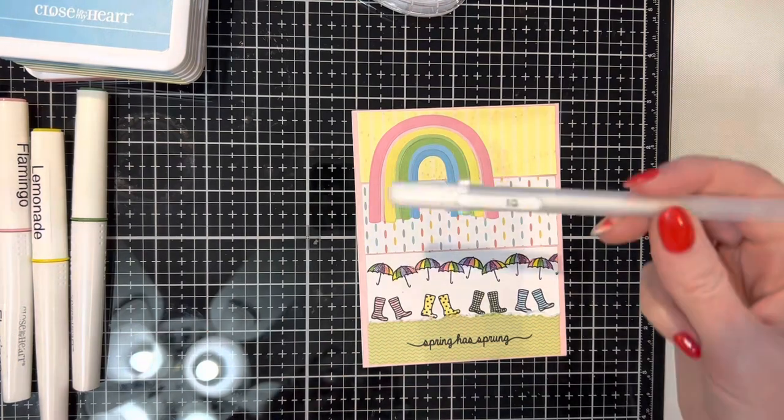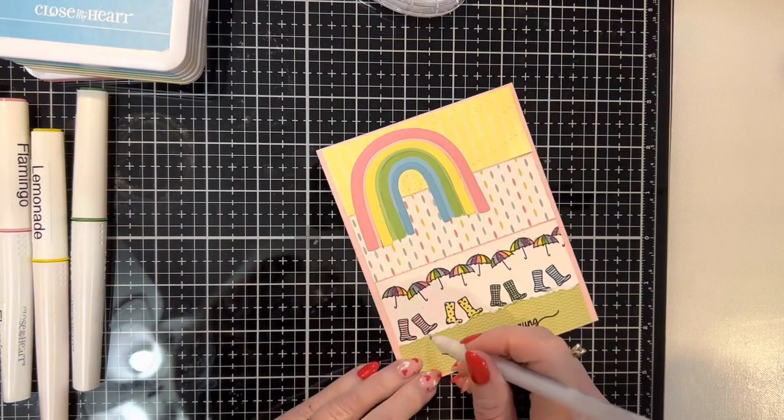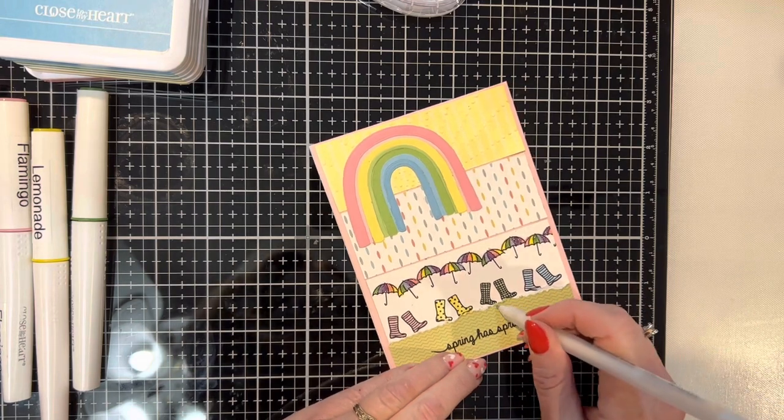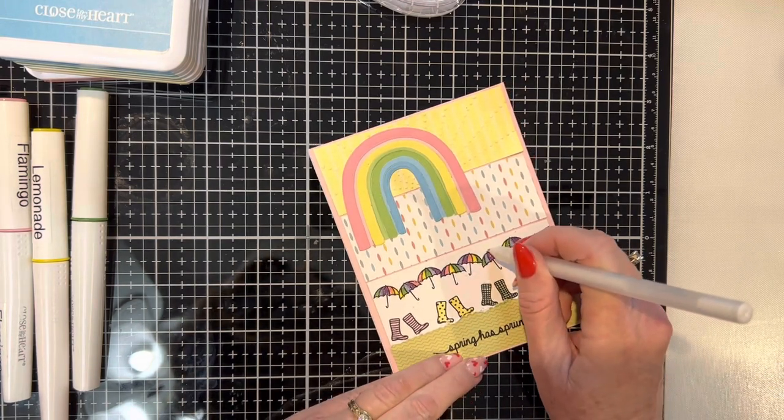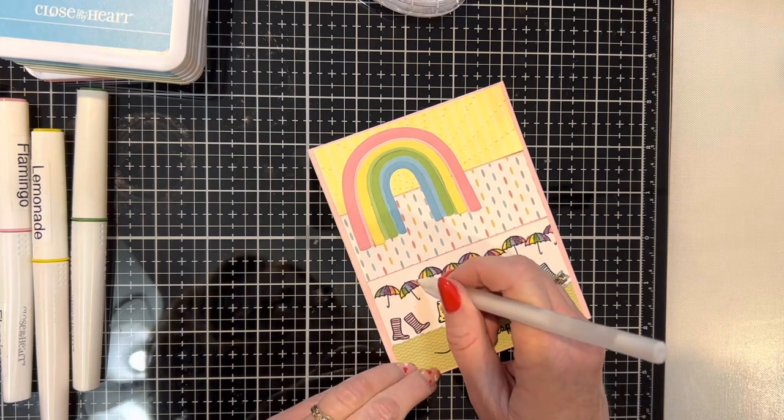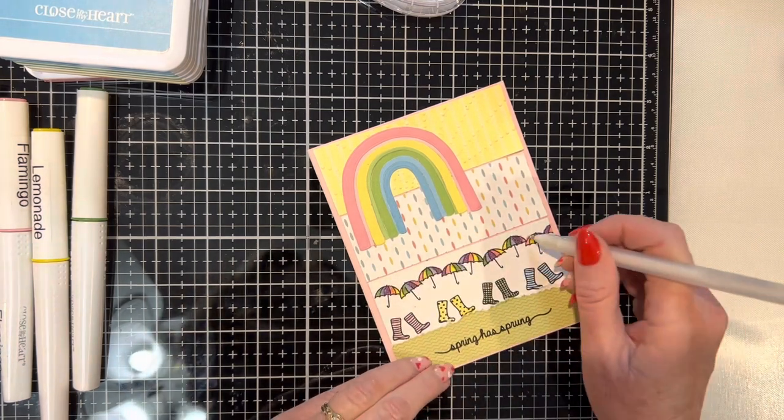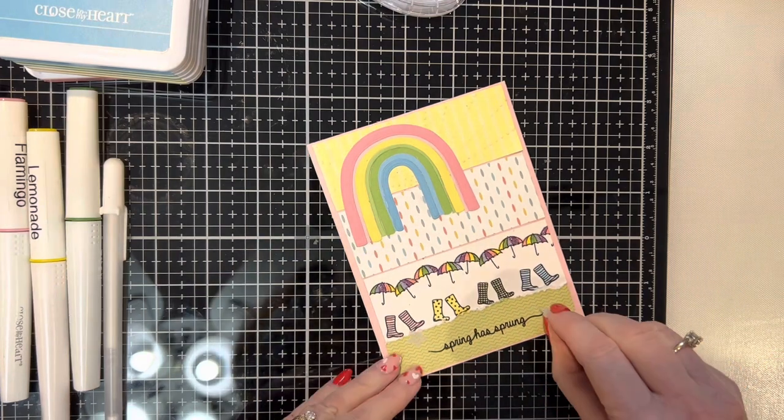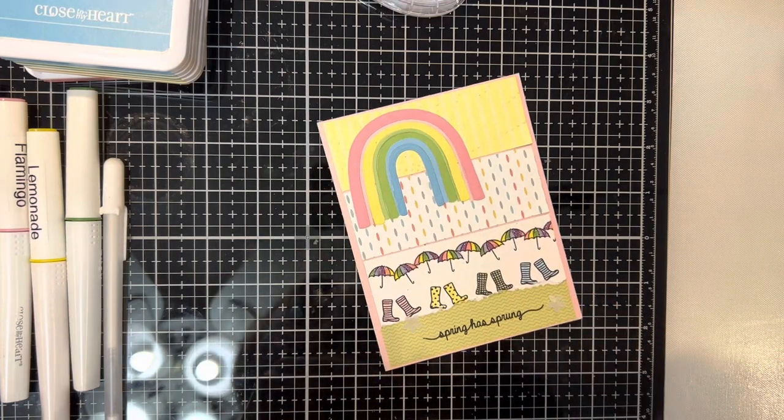Because I'm not quite as perfect on some of my stamping and coloring as I'd like to be, I go in with my white gel pen, and I just touch up any little areas that might have went outside of that stamped line. So I'm basically using my white gel pen as white out.